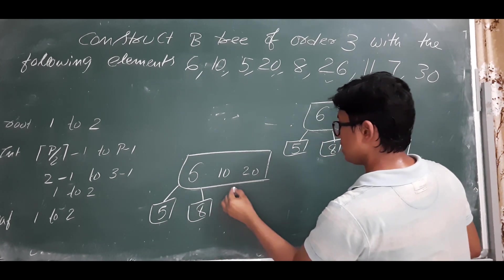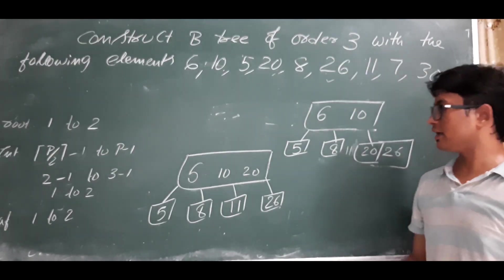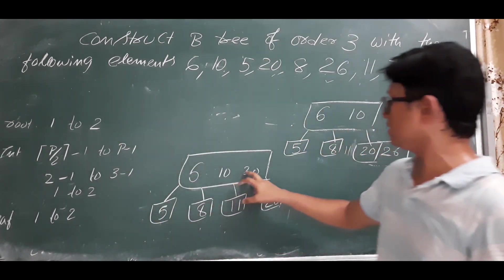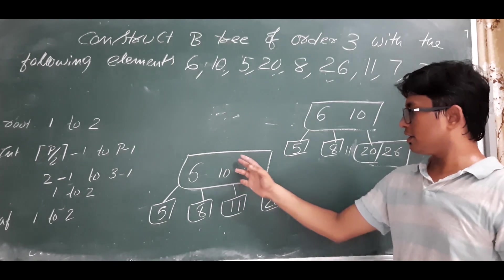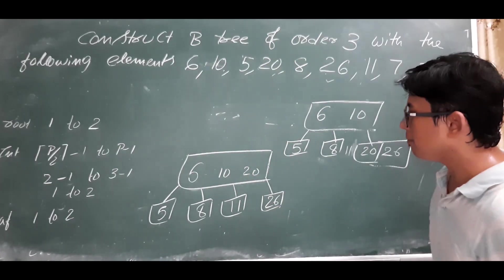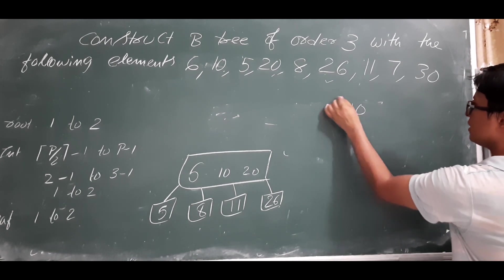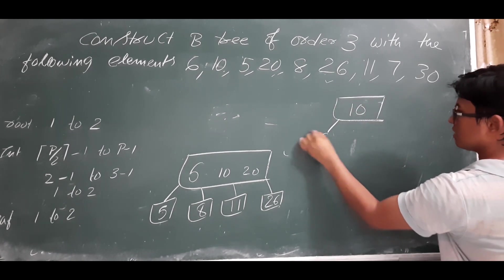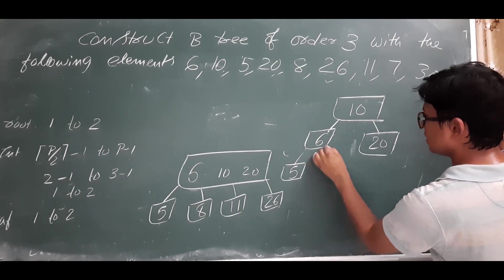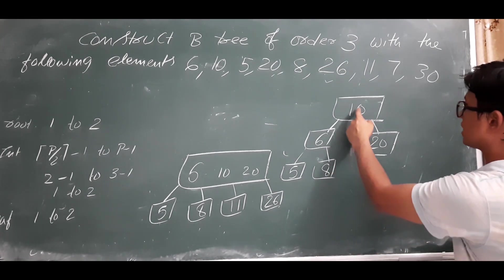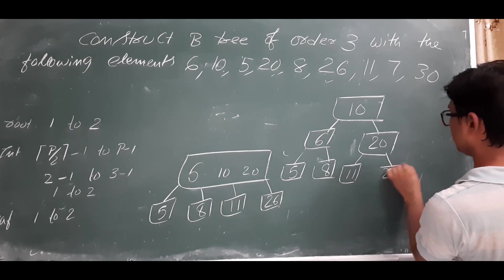But I cannot insert 20 at the root because the maximum is 2 keys and this would give 3 keys. So again I have to take the median — as step 3 says, recursively calculate the median and promote it to the parent node. The median of 6, 10, 20 is 10, so 10 becomes the new root. 6 is the left subtree and 20 is the right subtree. 5 is left of 6, 8 is right of 6, and 11 is left of 20 with 26 to the right.